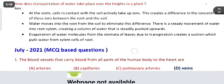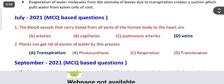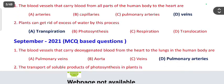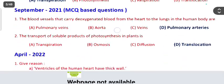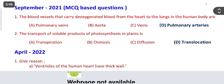In July 2021 MCQ: the blood vessels that carry blood from all parts of the human body to the heart are veins. Plants can get rid of excess water by transpiration. In September 2021: the blood vessels that carry deoxygenated blood from heart to the lungs are pulmonary arteries. The transport of soluble products of photosynthesis in plants is called translocation.